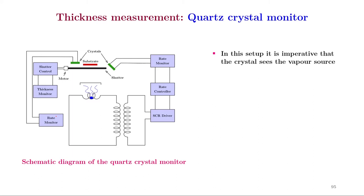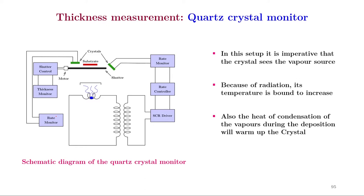In this setup, it is imperative that the crystal sees the vapor source. Because of radiation, its temperature is bound to increase. Also, the heat of condensation of the vapors during the deposition will warm the crystal. Hence suitable radiation shield should be provided to protect the quartz crystal.